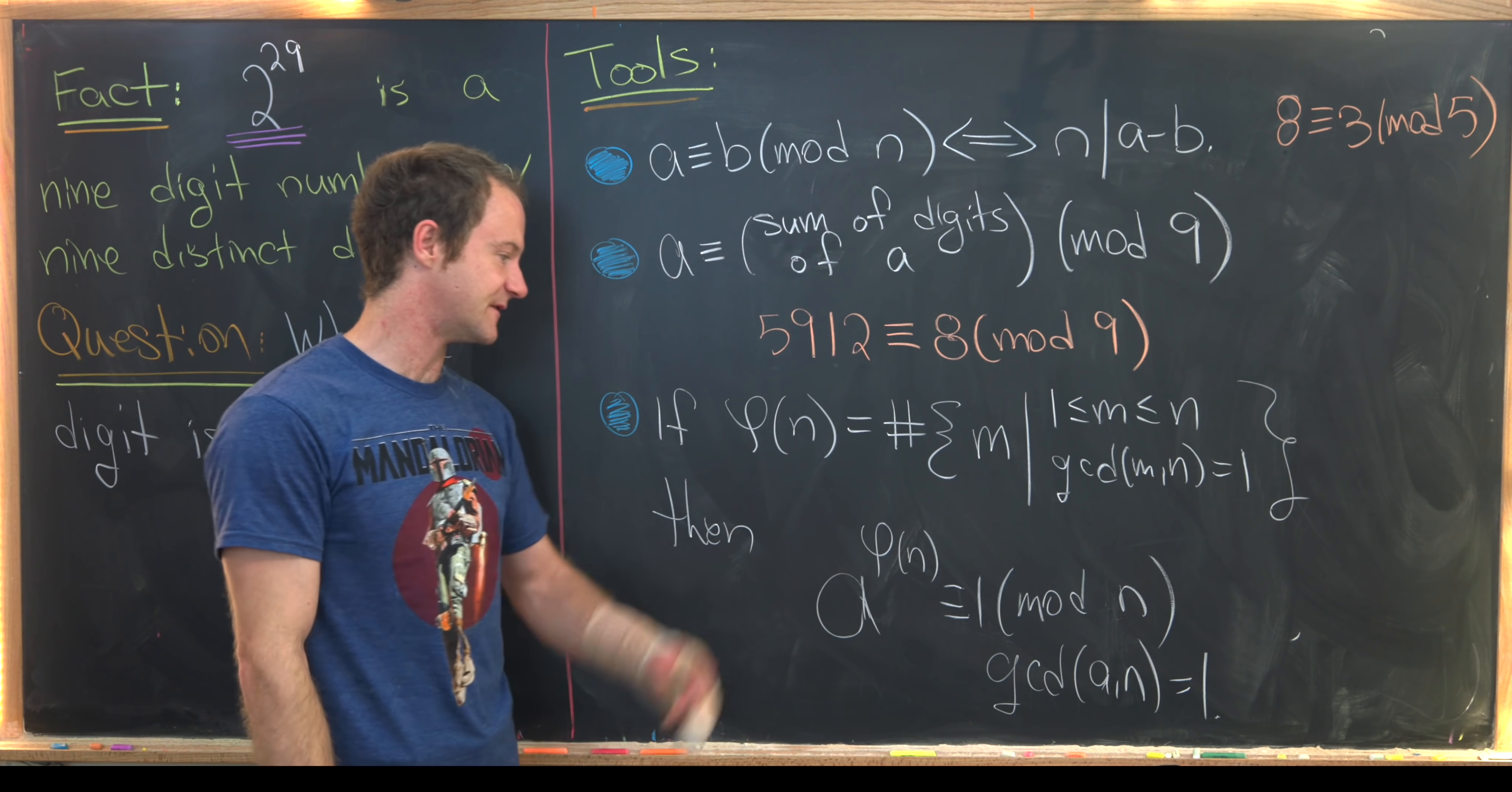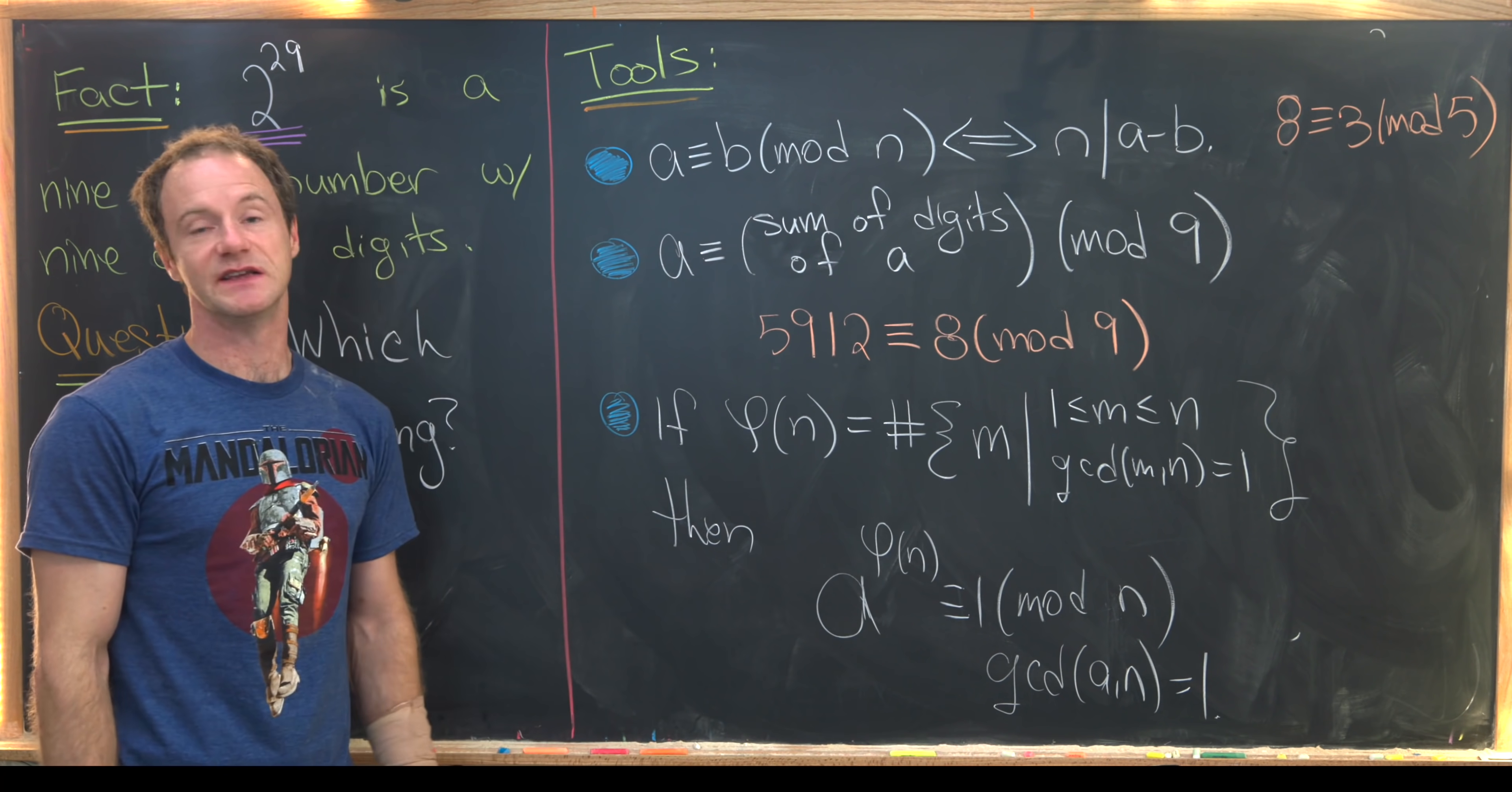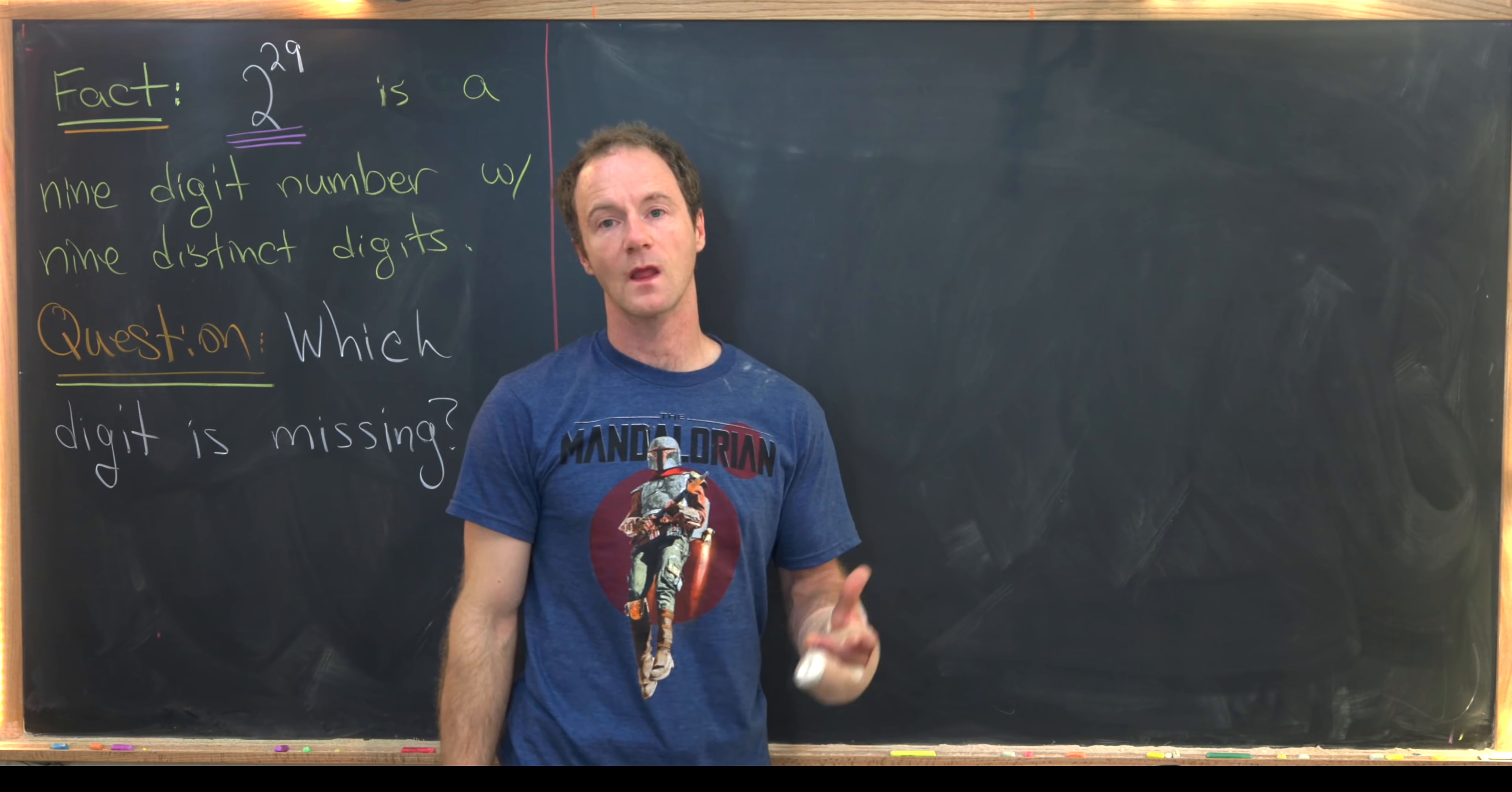Then Euler's theorem says a to the phi of n is congruent to one mod n if the gcd of a with n is equal to one.